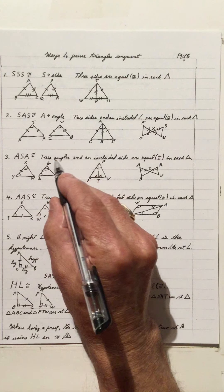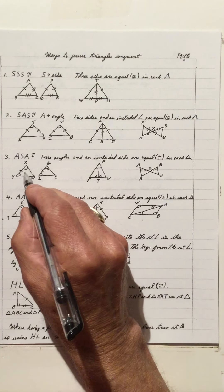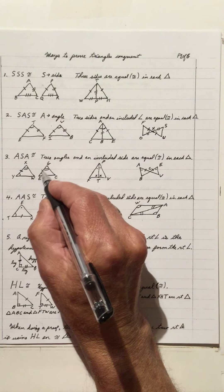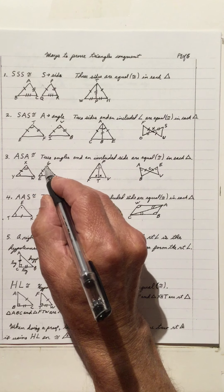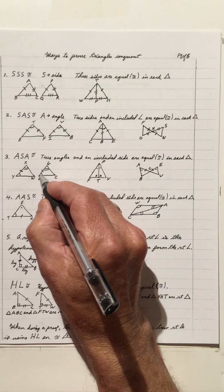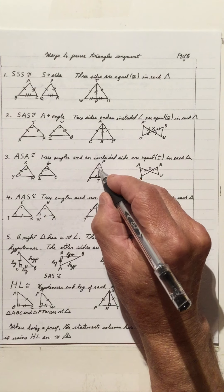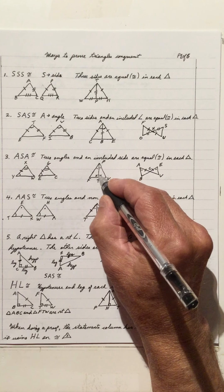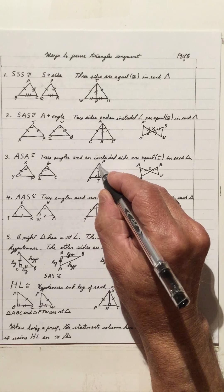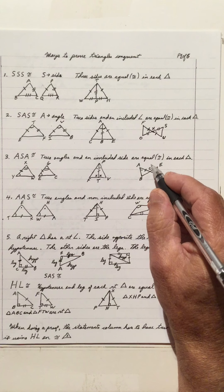ASA congruency is two angles and an included side of each triangle being equal. So two angles and an included side: angle X equals angle G, angle Y equals angle E, and XY equals GE — angle, side, angle. That's also true here: we've got two angles equal, and PT equals PT as a common side — so side, angle, side. Triangles are congruent.